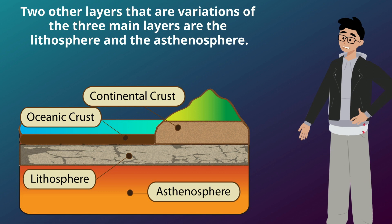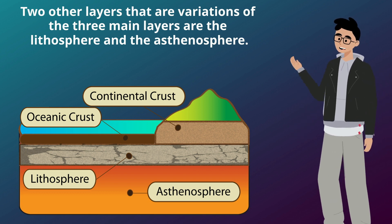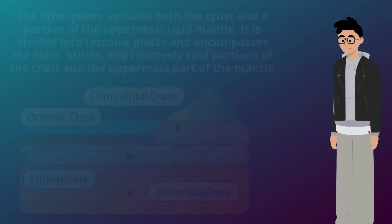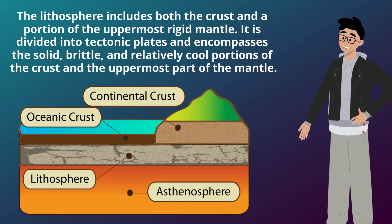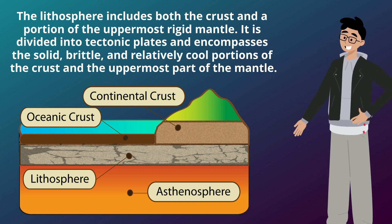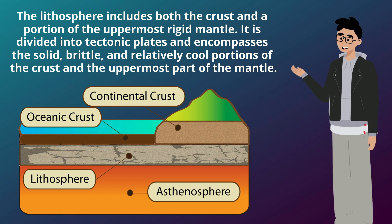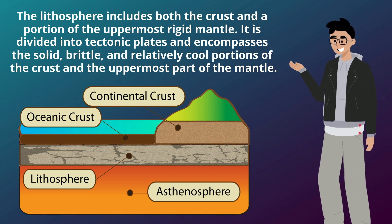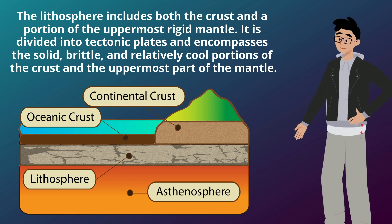Two other layers that are variations of the three main layers are the lithosphere and the asthenosphere. The lithosphere includes both the crust and a portion of the uppermost rigid mantle. It is divided into tectonic plates and encompasses the solid, brittle, and relatively cool portions of the crust and the uppermost part of the mantle.